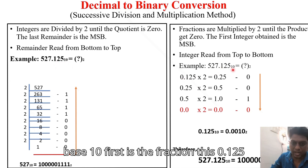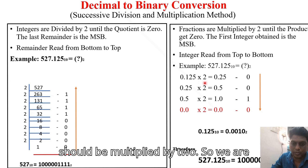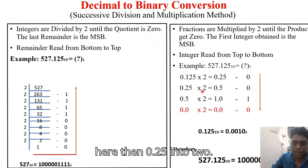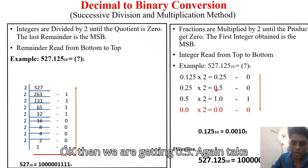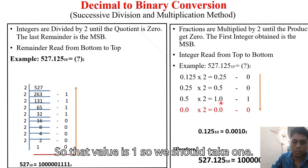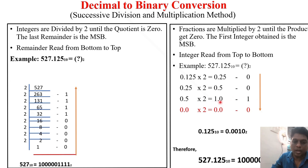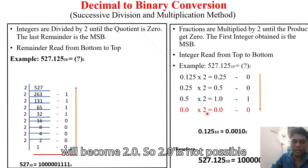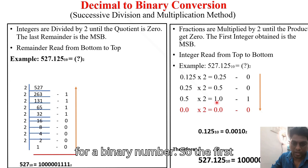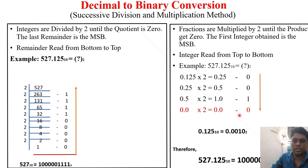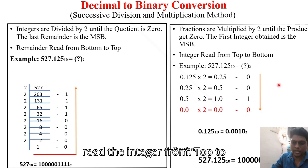For the fractional part 0.125, multiply by 2 to get 0.25 — take the integer part 0. Then 0.25 × 2 = 0.5 — take 0. Then 0.5 × 2 = 1.0 — take 1, and keep only 0.0. Since 0.0 × 2 = 0, we stop here. Reading the integer parts from top to bottom gives the binary fractional part.